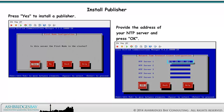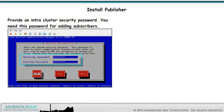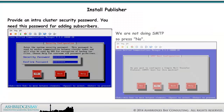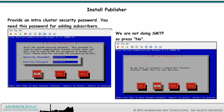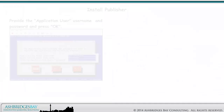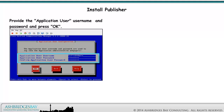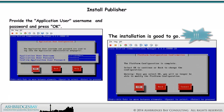Provide the address of your NTP server and press OK. Provide an inter-cluster security password — you need this password for adding subscribers. We are not doing SMTP, so press No. Provide the application user username and password and press OK. The application user has access to the CM administration, serviceability, and reporting web pages. The installation is good to go.